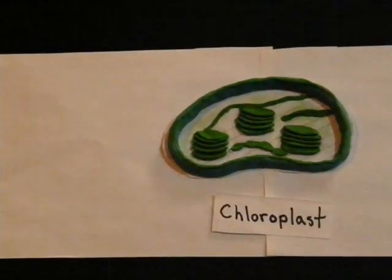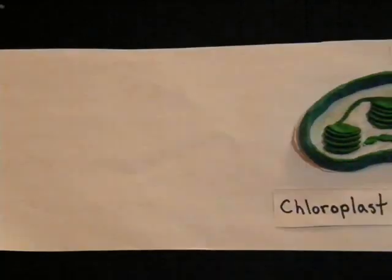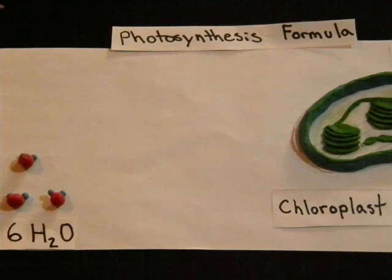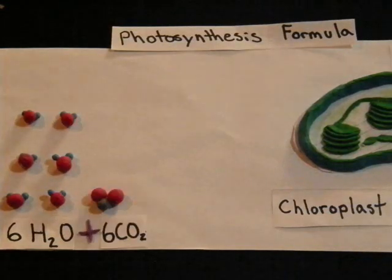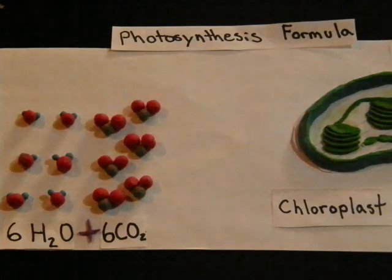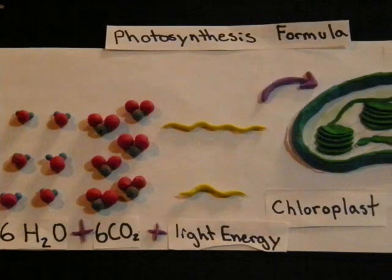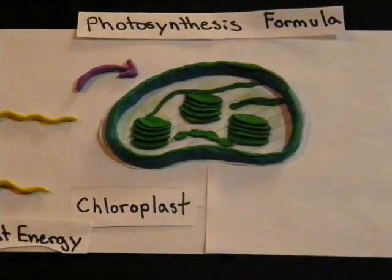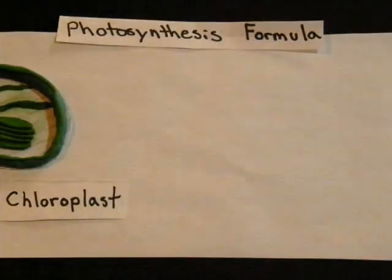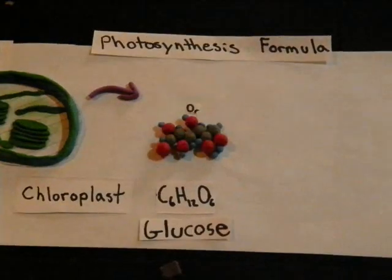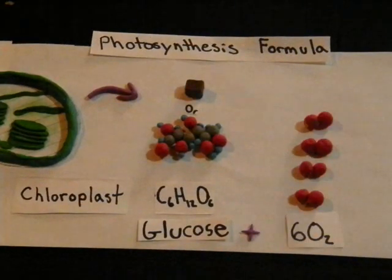You may know that photosynthesis takes place inside the chloroplasts, but the process isn't as simple as six water molecules and six carbon dioxide molecules with a little light energy that go into the chloroplasts to produce C6H12O6 or glucose and six oxygen gas.